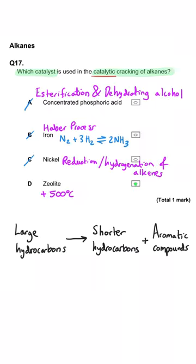Nickel is a catalyst in the reduction of alkenes using hydrogen. So the hydrogenation which you'll have encountered in a variety of different topics.